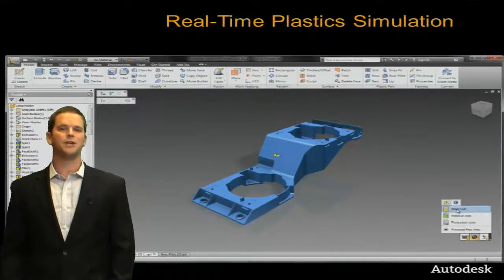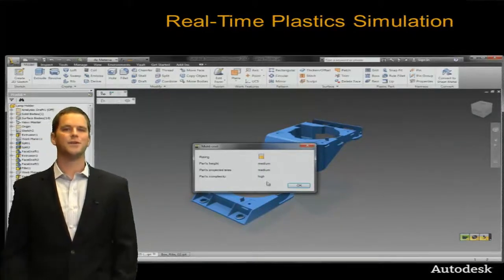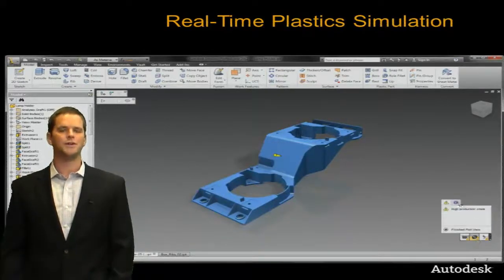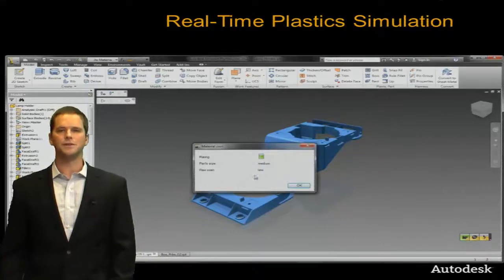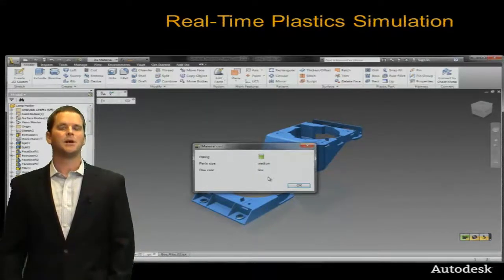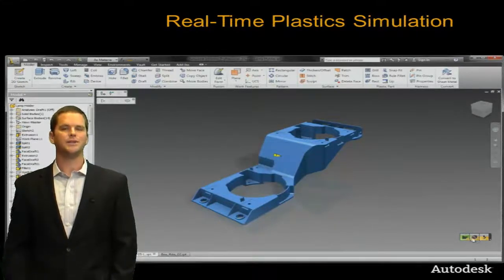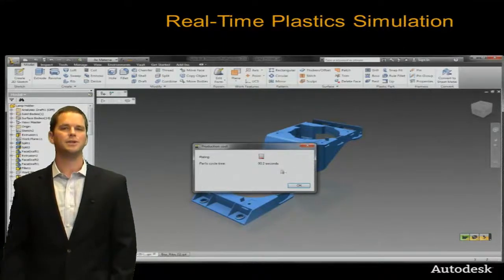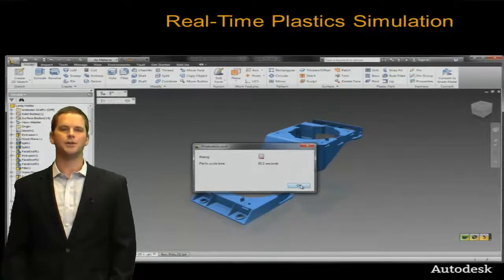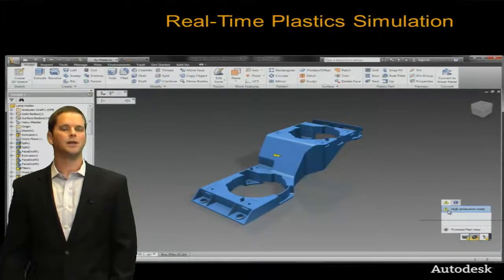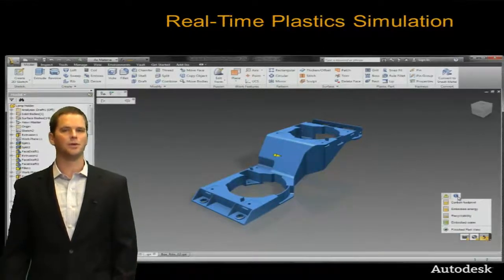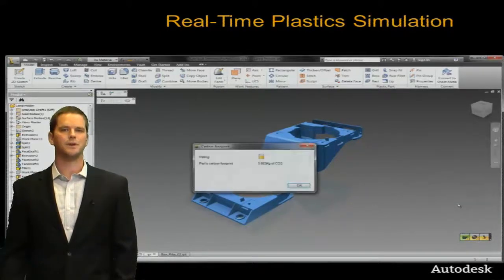There are two more indicators we haven't touched yet. Next up is cost — we have three factors. Mold cost is influenced by the overall size and complexity of the part; for example, the more undercut features detected, the higher the cost. Material cost is a relative indicator based on the material selected — the default is ABS, but that can be changed in the iProperties dialog. Production cost is completely based on cycle time, and the biggest factor affecting cycle time is usually cooling time. Making the part thinner will help reduce cycle time and cost.